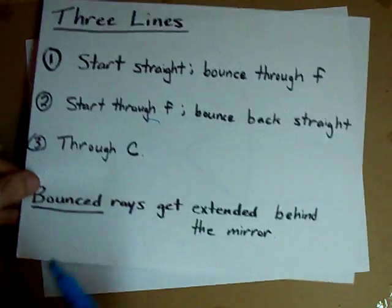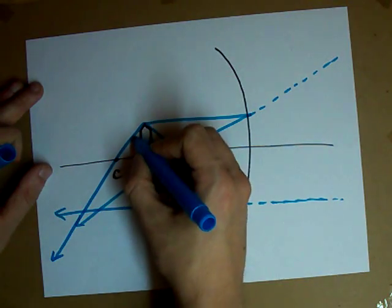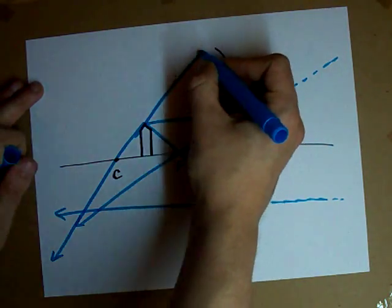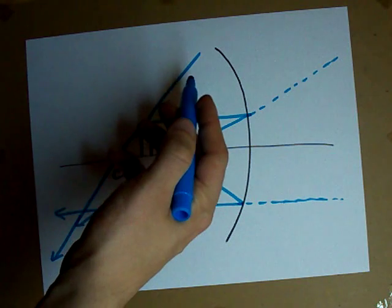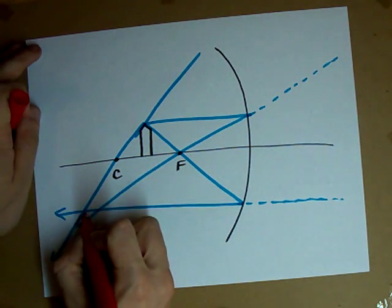Last line, go through C. So start at the pencil tip, go through C, extend it in both directions. This should hit the mirror, but to be completely honest, it's rare that it's ever actually going to. So what you'll notice is that all three of these lines kind of meet in this general area.